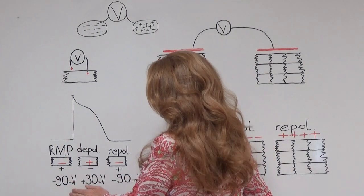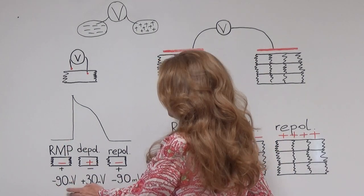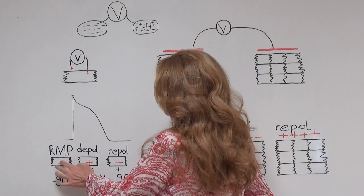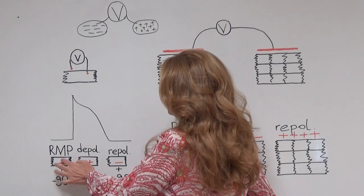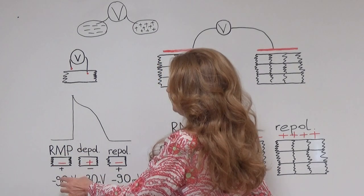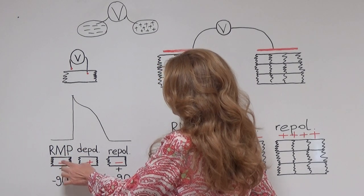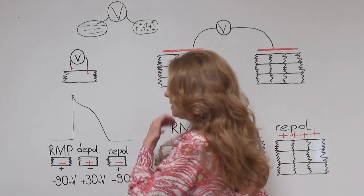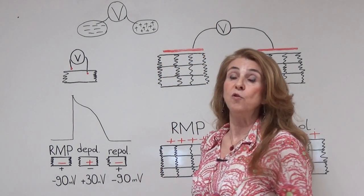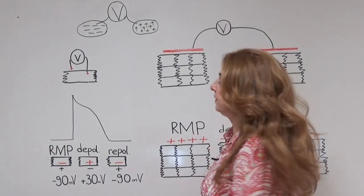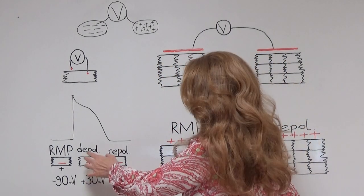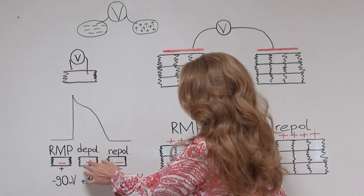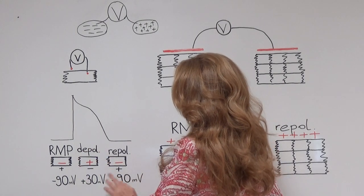This minus 90 millivolt resting membrane potential means that on the inner side of the membrane surface there is 90 millivolt more negativity. What happens during depolarization?